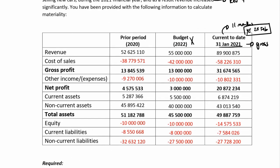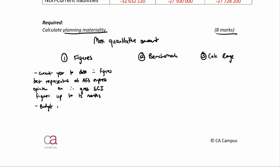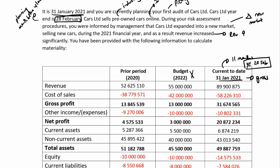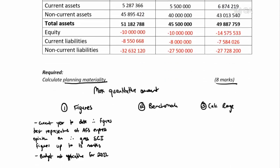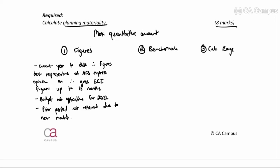I've selected current year to date as my figures. Budget would not be applicable because the figures are for 2022 and we are auditing 2021. Prior period would not be applicable either — looking at my notes, there was a new market, so prior period does not take into account the new market expansion in the current year.